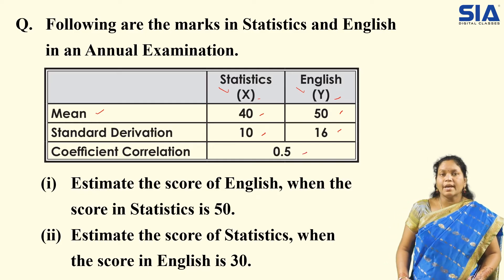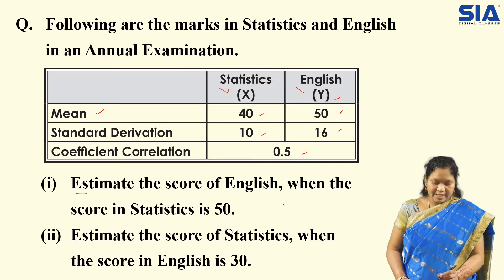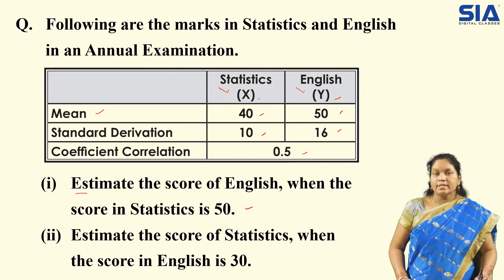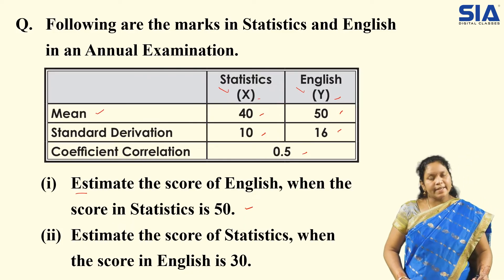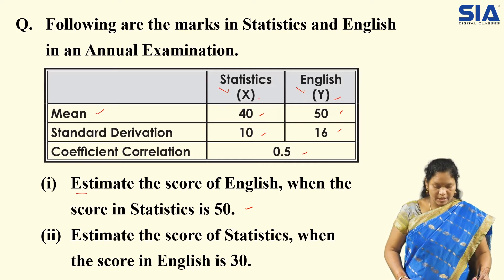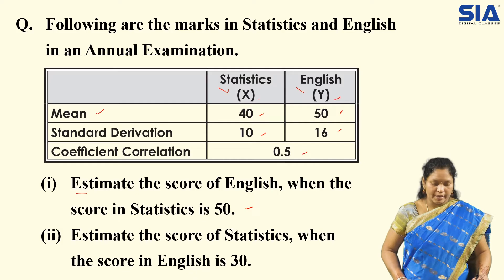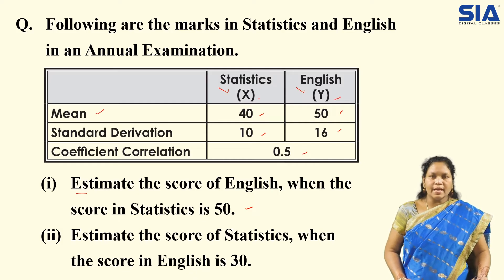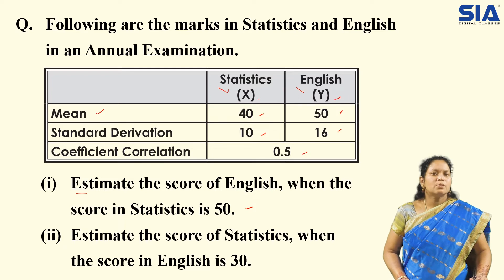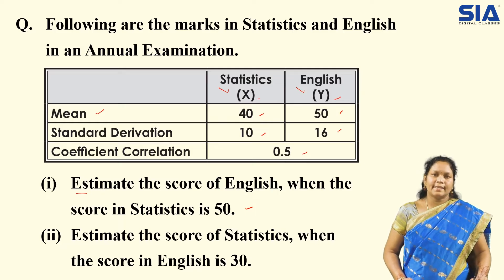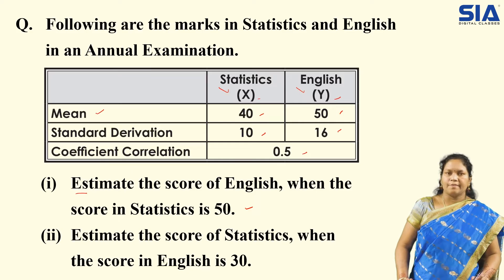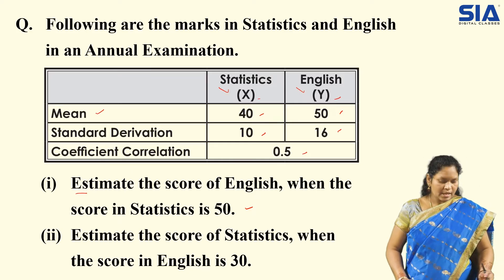First, they have given the mean value — mean for statistics and English. I am considering statistics as x and English as y. They have given mean for x and for y, standard deviations, and the coefficient of correlation. Remember r — r is the correlation coefficient. So correlation coefficient r value is also given. What is the question? Estimate the score of English when score in statistics is 50. So x value is given and y we need to find out.